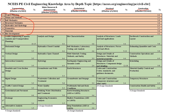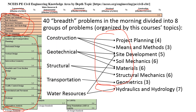The depth portion, shown in green, is what you specialize in depending on which discipline you chose. For instance, if you chose transportation, you have the same 40 breadth problems and then 40 depth problems specific to transportation, associated with nine design standards. For structural, you take the same 40 breadth problems plus 40 depth specialization problems covered in 10 design standards.